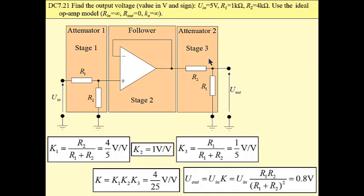The first attenuator gain is 4 over 5. The second is 1. The second stage follower gain, obviously, is 1.